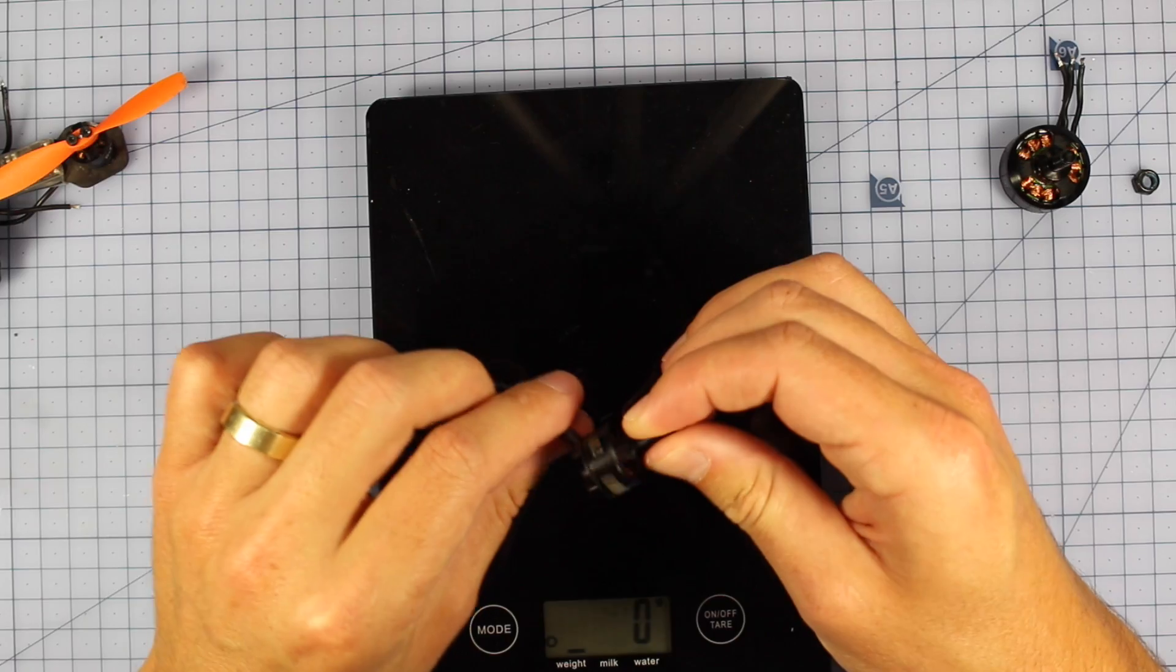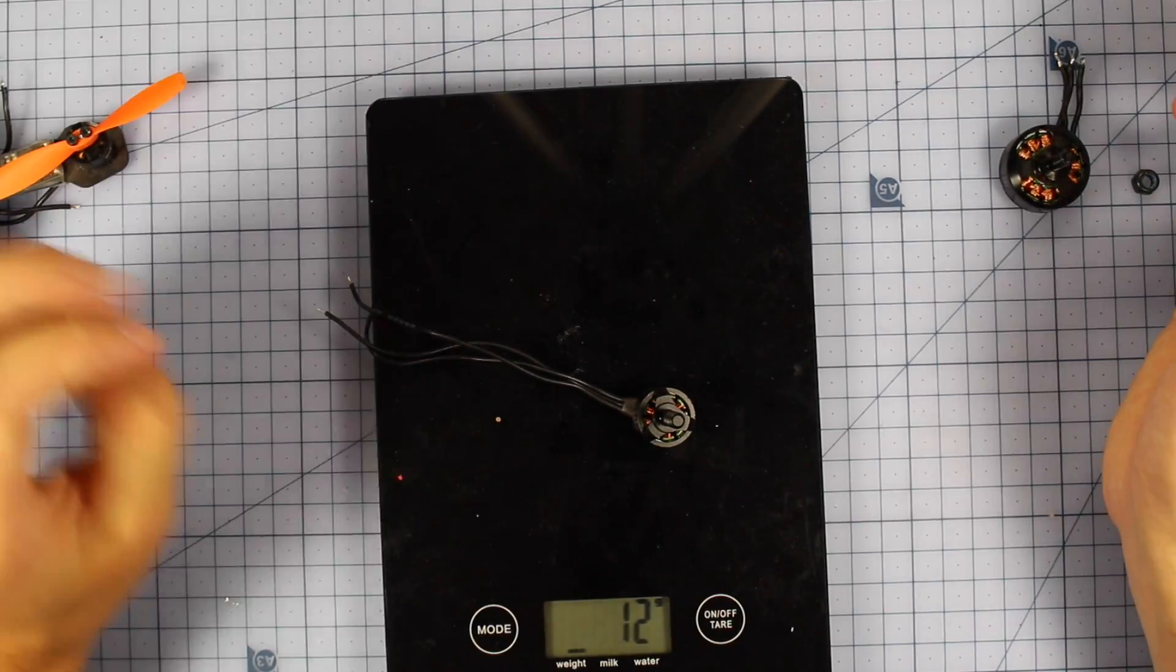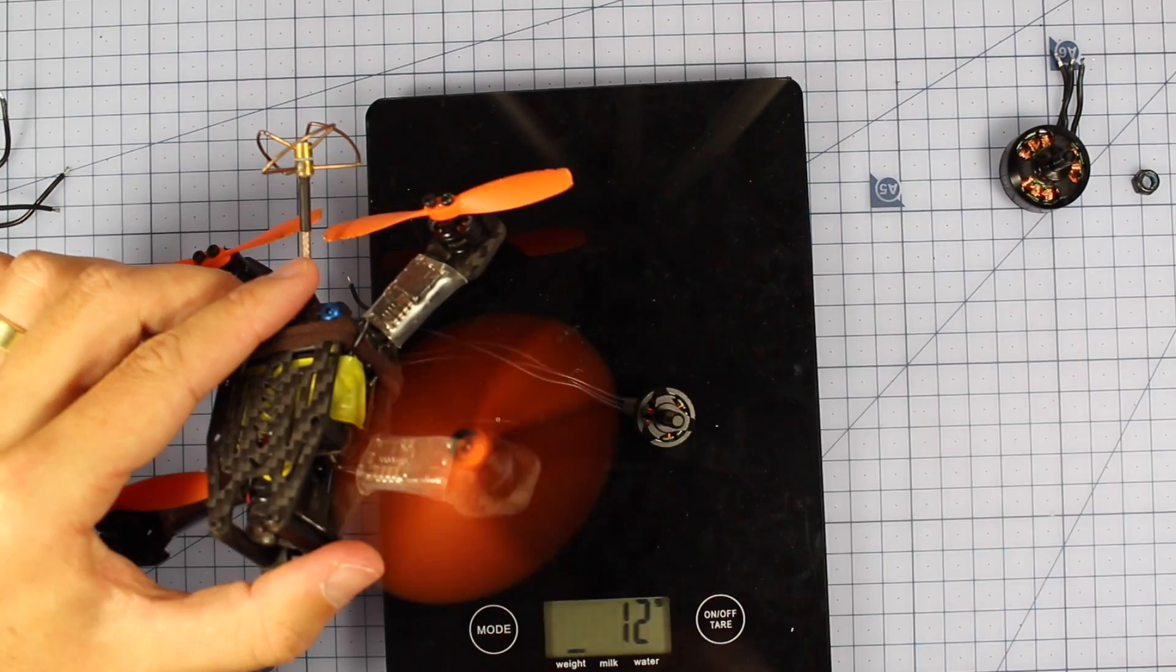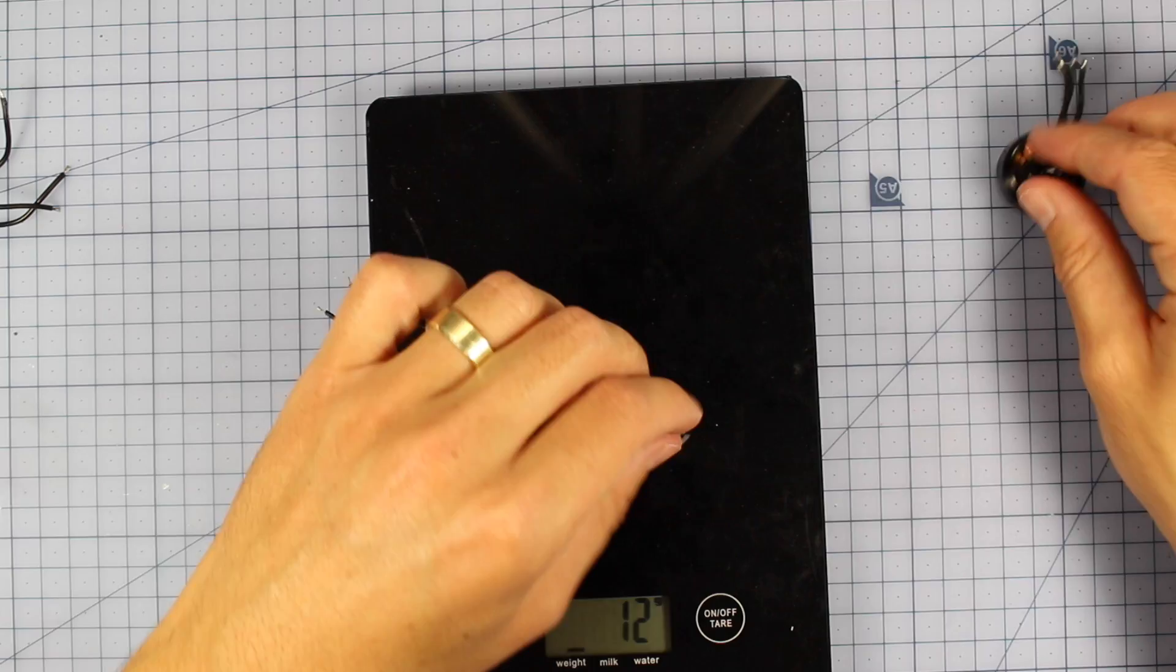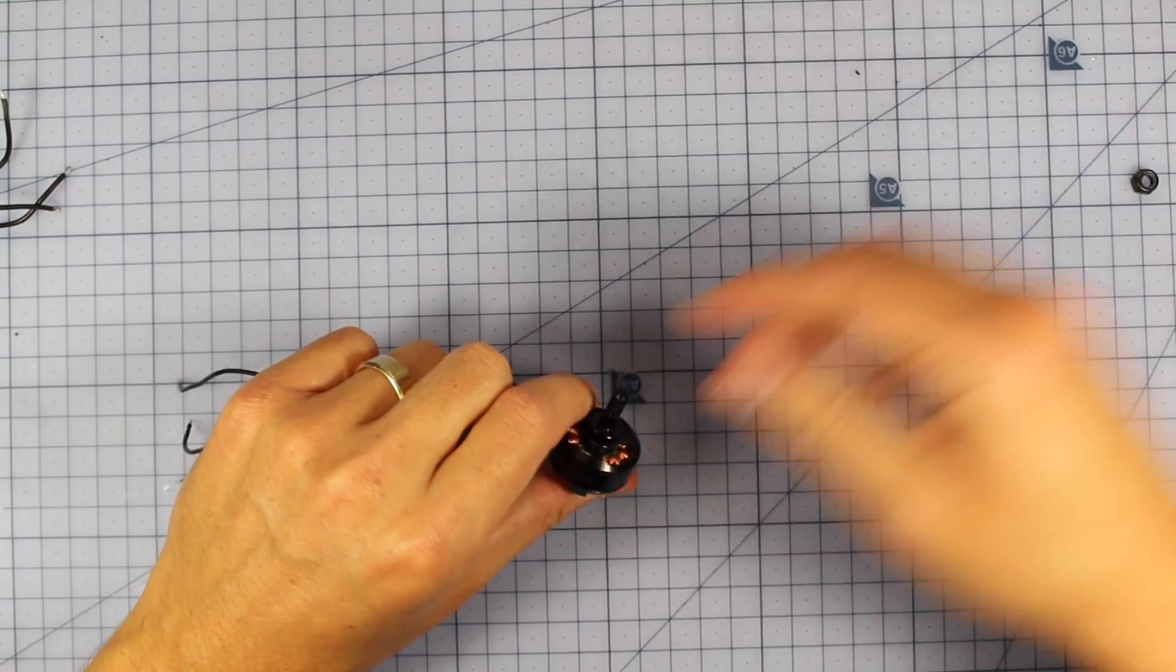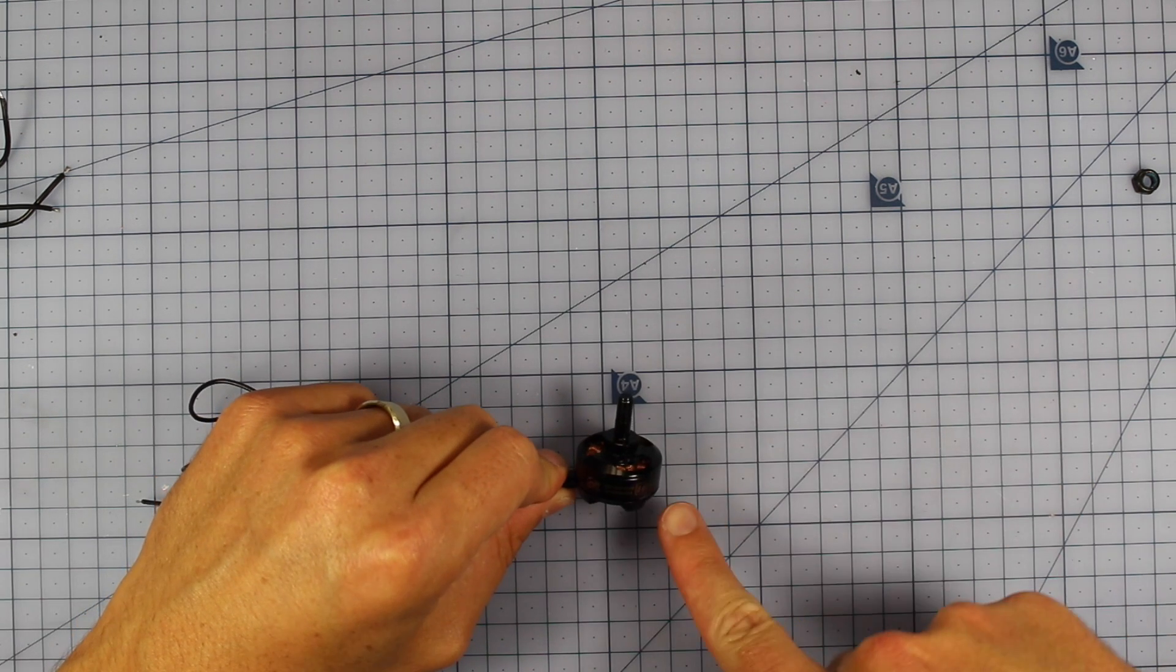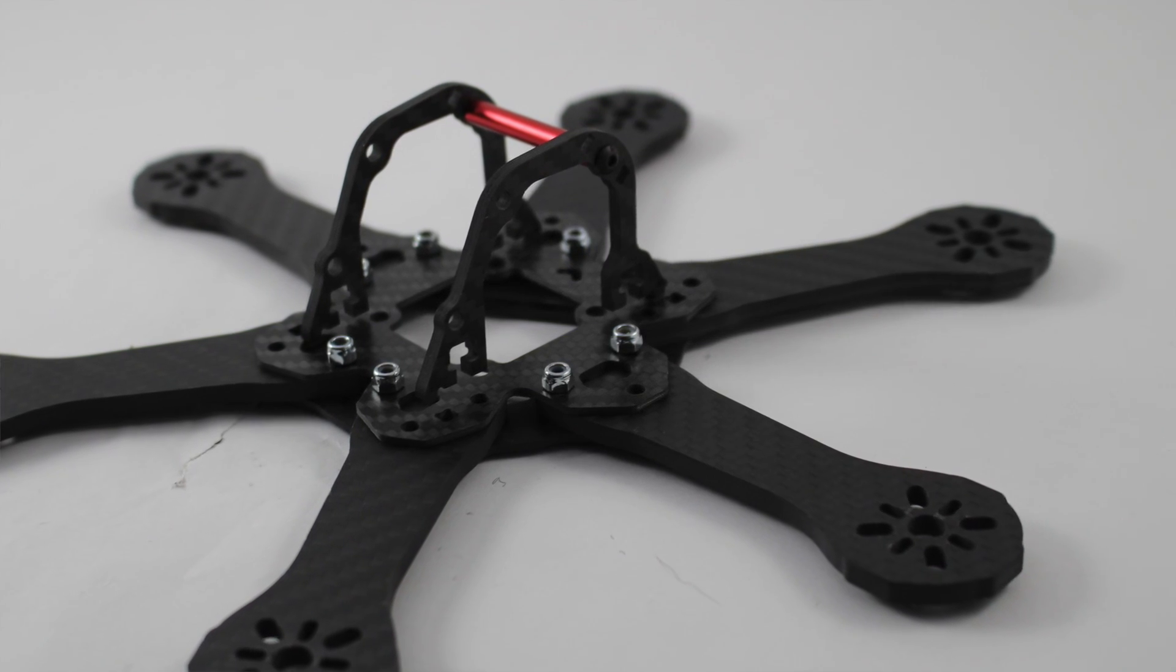As opposed to, I've got a DYS 4000 KV, and even without the leads clips it's only coming in at 12 grams. These little motors are even lighter, I just don't have any spares so I can't take them off. So there is a huge difference in weight between these two.